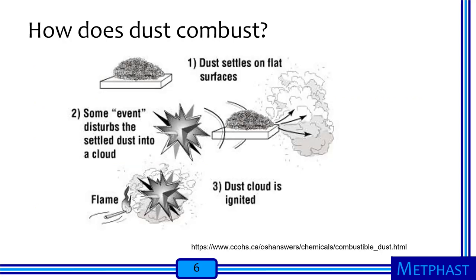How does a dust combust? Most commonly, dust settles on a flat surface — usually a noticeable layer. Then some event will disturb that settled dust and make it form a cloud in the air. In the presence of an ignition source, that dust cloud is ignited, creating a combustible situation where the dust ignites. You get this deflagration where the flames move outward and it becomes a larger situation.